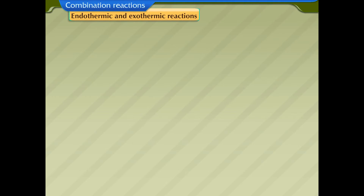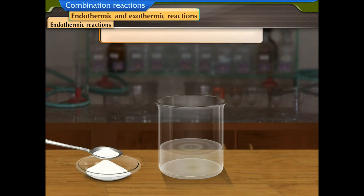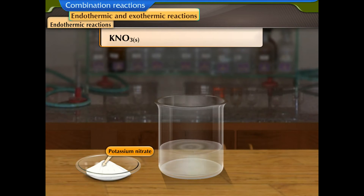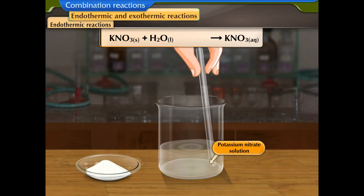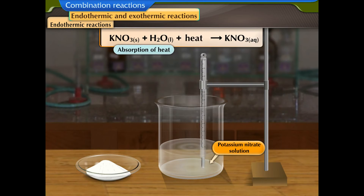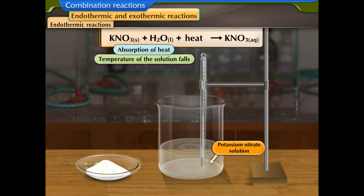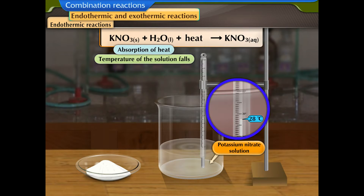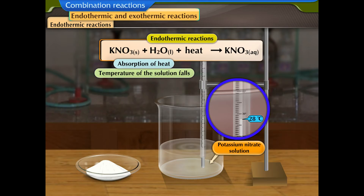Let us understand endothermic reactions. Potassium nitrate reacts with water to form a solution of potassium nitrate. In this reaction, there is absorption of heat by the reactants, hence the temperature of the solution falls. Reactions in which reactants require heat to form products are called endothermic reactions.